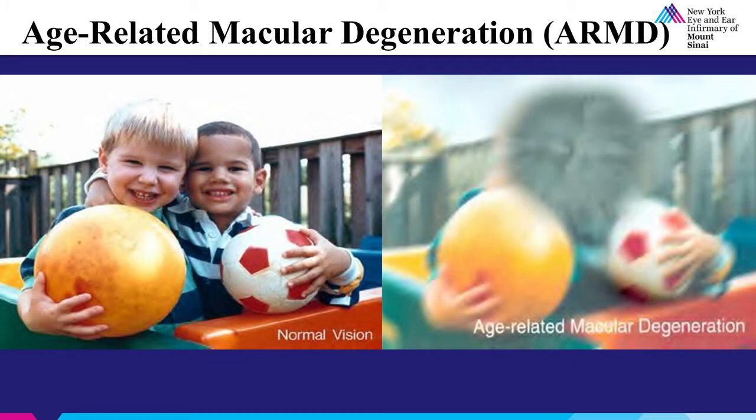These images depict what it may be like to have macular degeneration. The photograph on the left is what a person with normal vision would see — note the bright colors, central clarity, and intact peripheral vision. In the photograph on the right, however, there is a central area which is obscured, and surrounding that dark area the vision is quite blurry as well. The colors remain relatively intact in the periphery.